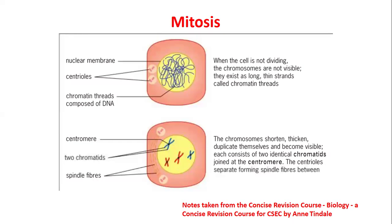Mitosis is basically the replication of body cells. Mitosis is not involved in sexual reproduction — that's the major difference between mitosis and meiosis. When body cells replicate, they replicate identically. The same 46 chromosomes — the diploid number — are replicated right down to the T. It has to do with body cells and not sexual reproduction.